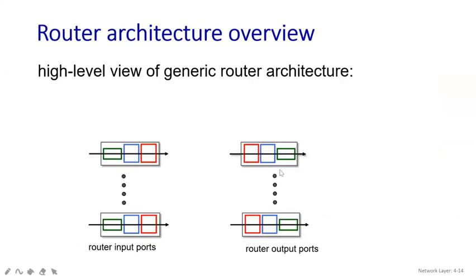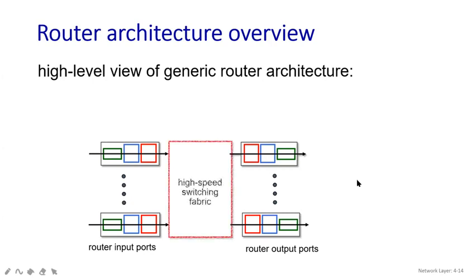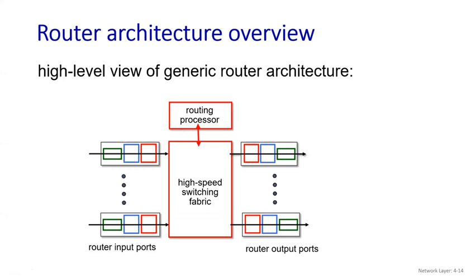Moving towards the slide, you can see the router architecture. Until now, whatever router architecture we have seen was just a circle with a multiplication sign over it. Now we will see exactly what is inside the router, how the ports have been designed, and how we are going to send packets from one place to another. This is a high-level view of router architecture. You can see the input ports and output ports, and within them there is a switching fabric, also known as the routing processor, which has very high processing speed.